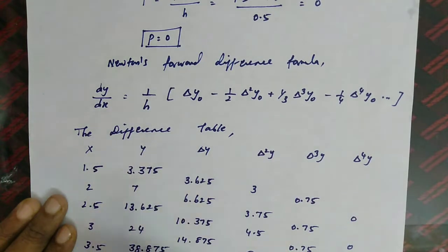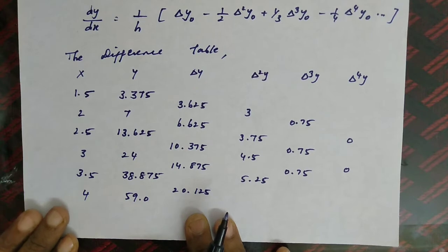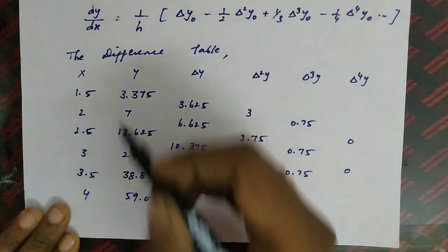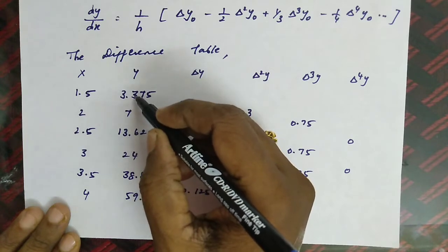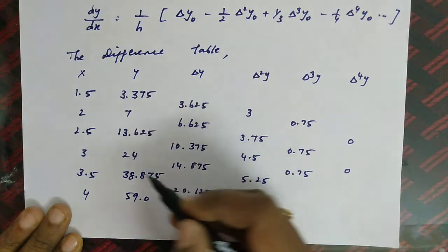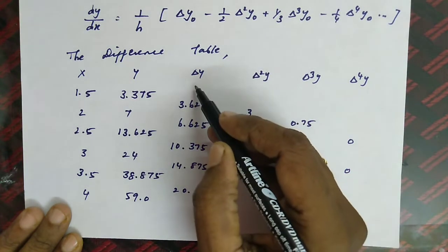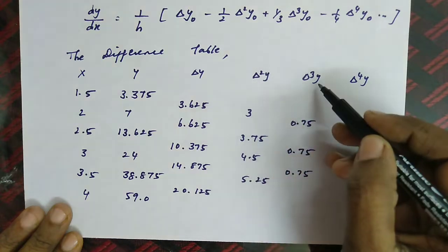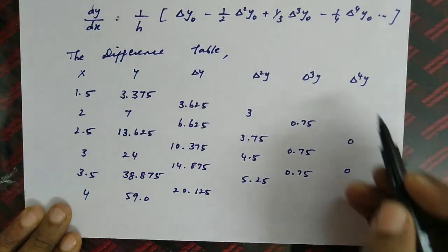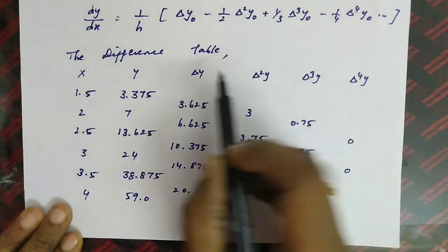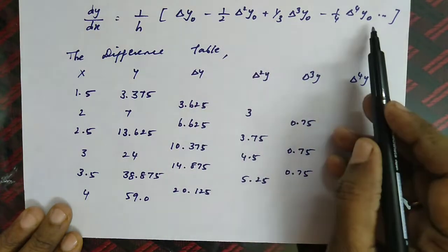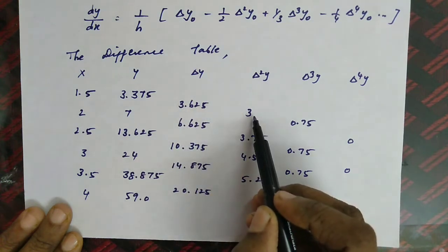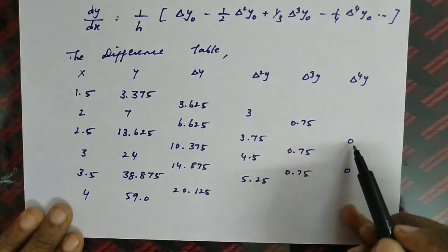First we have to form the difference table. The x data and y data values are taken, and Δy is the difference between consecutive y values: 7 minus 3.375, 13.625 minus 7, and so on. From this we find Δy, Δ²y, Δ³y, and Δ⁴y. We stop at Δ⁴y. The values Δy₀, Δ²y₀, Δ³y₀, and Δ⁴y₀ are the beginning values of the difference table, since we are using the forward difference formula.